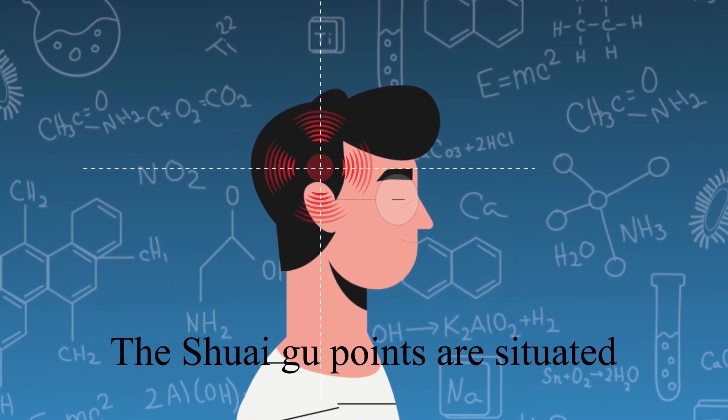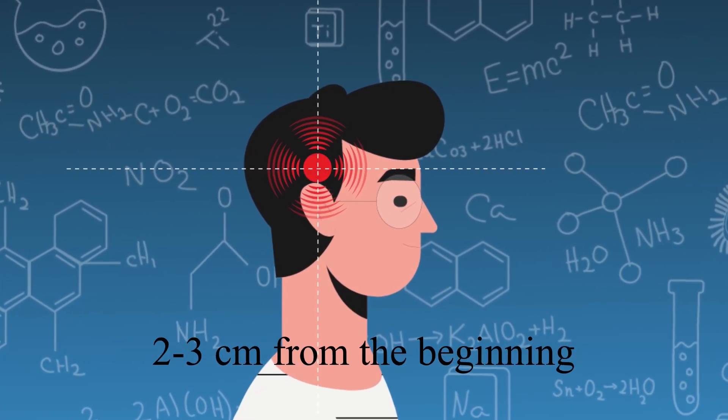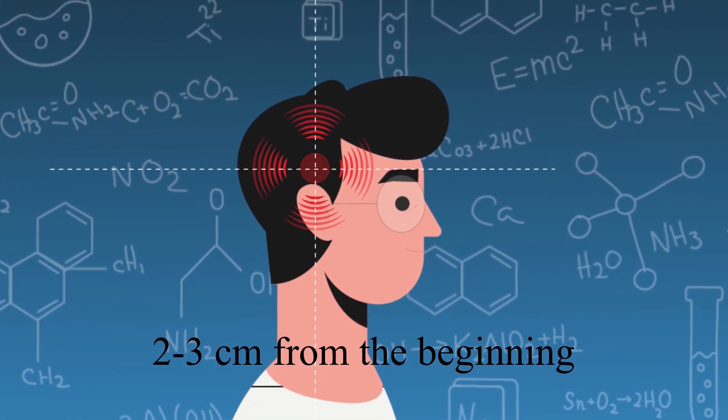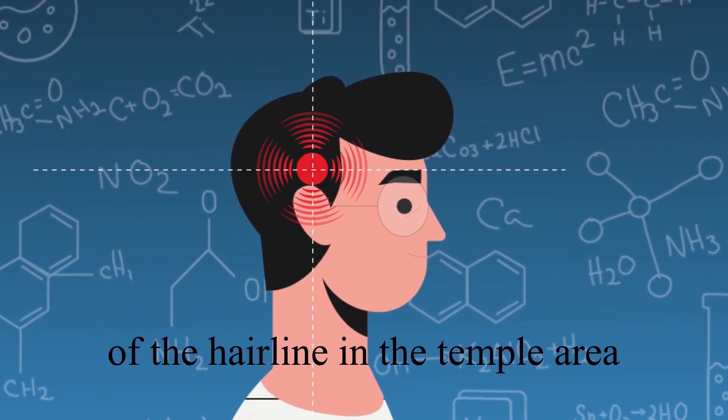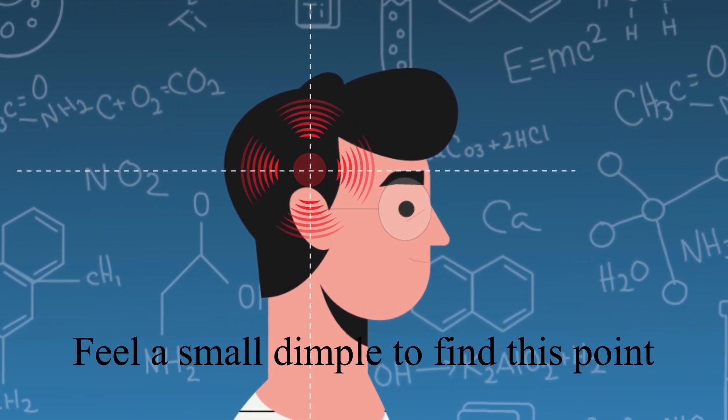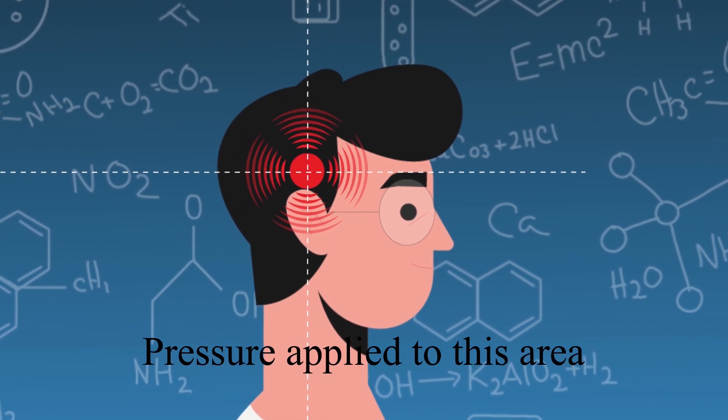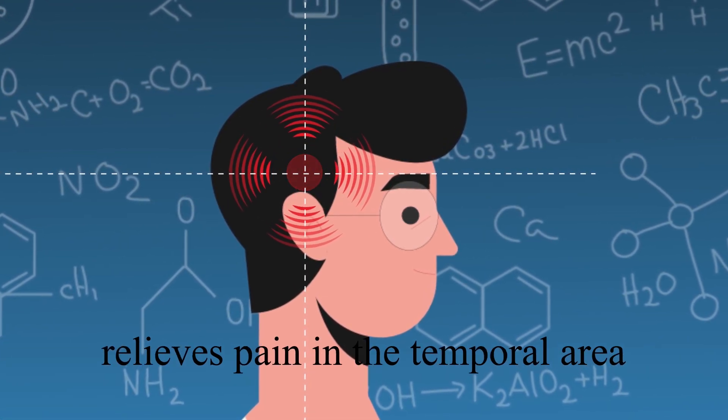Suigu Point. The suigu points are situated 2 or 3 cm from the beginning of the hairline, in the temple area. Feel a small dimple to find this point. Pressure applied to this area relieves pain in the temporal area and eye fatigue.